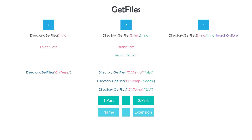The third overload has three parameters. The first two parameters are the same as the second overload. The third parameter is for the search option: either AllDirectories or TopDirectoryOnly. The difference is whether we want to get files from the folder only, or also from the subfolders inside the folder. The first option returns all files from the folder and subfolders, and the second returns only files from the folder directly.